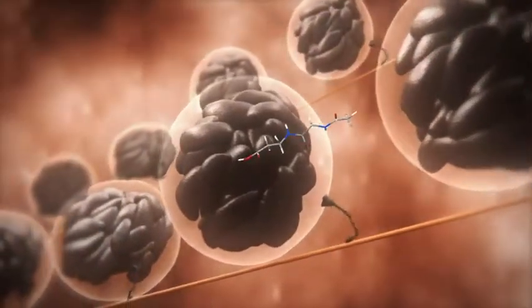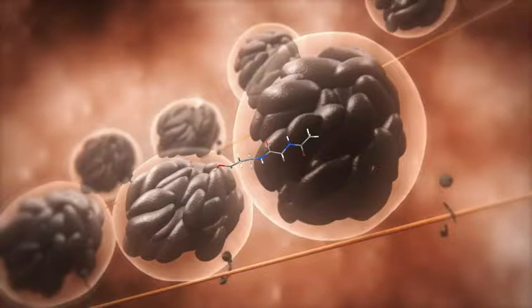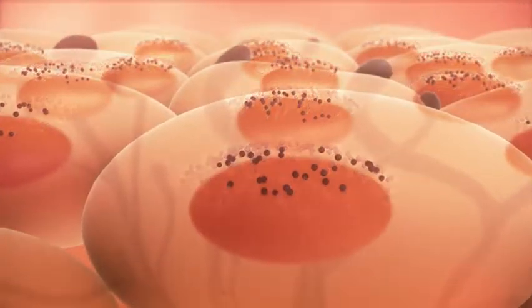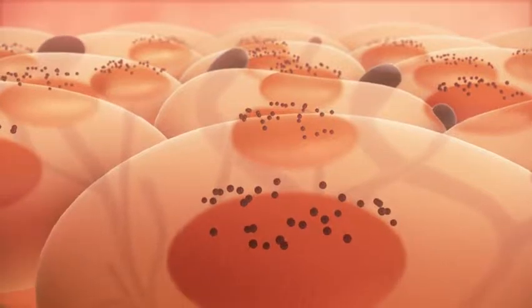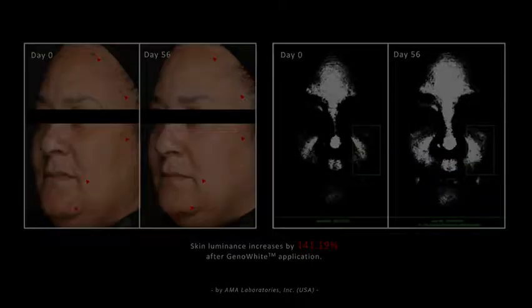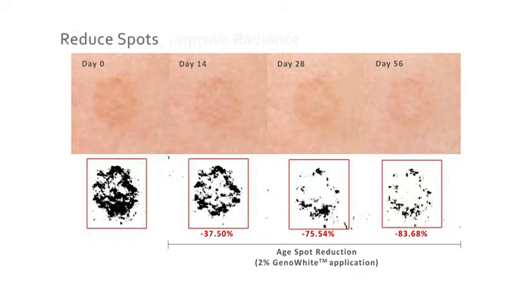Geno White is able to effectively interrupt this transport system, and in turn, prevent the melanosome distribution. All these multiple targeting properties of Geno White are indeed the key to its excellent efficacy. Clinically proven to reduce spots, improve radiance and even skin complexion in just 14 days.